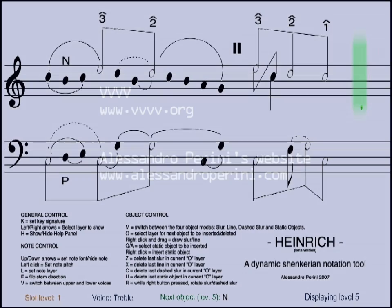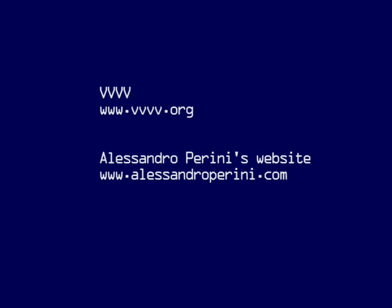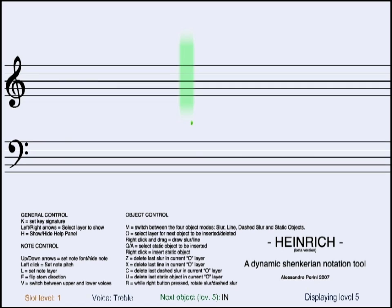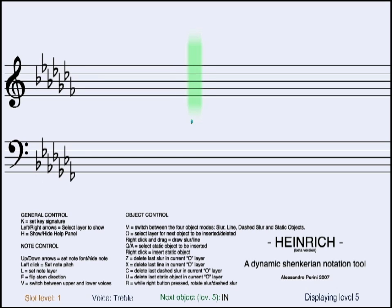Heinrich was developed in VVVV and can be downloaded from the author's website. The first thing you can do once the software is idle is to select the key signature. You can cycle through the 12 key signatures by pressing the letter K on your keyboard.